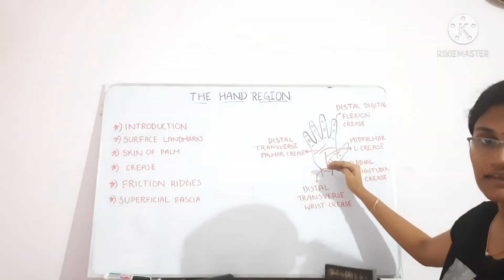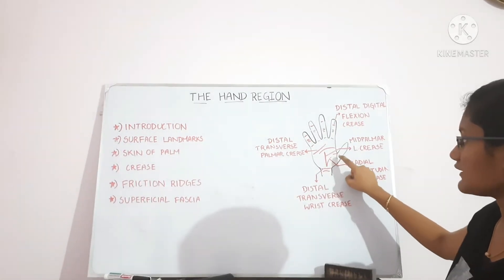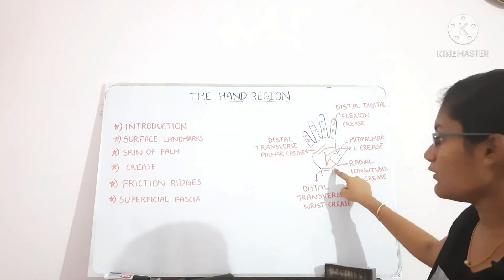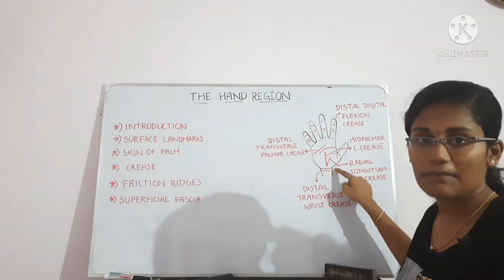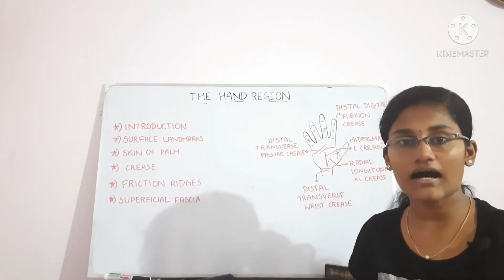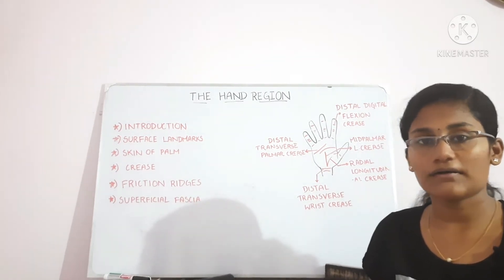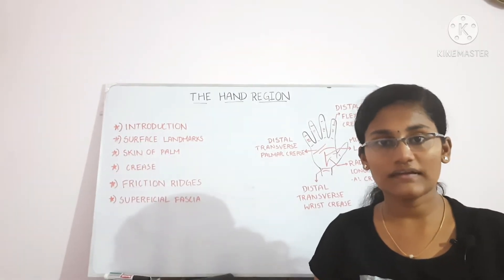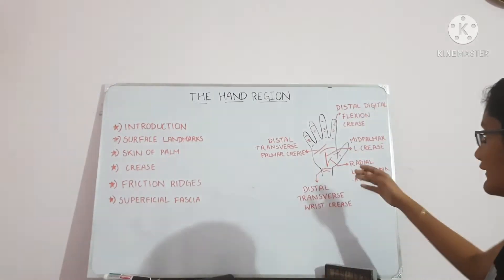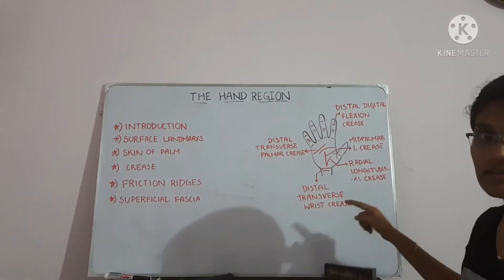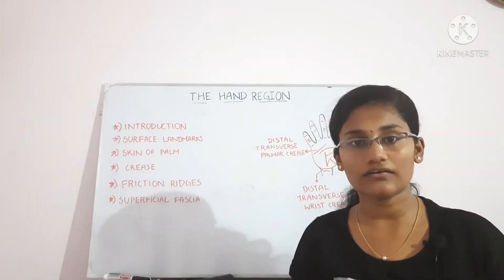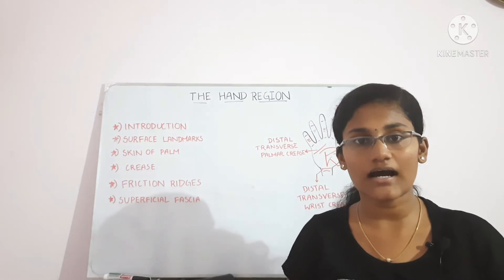The tubercle of scaphoid is present at the base of the thenar eminence, lateral to the distal transverse wrist crease, and lateral to the tendon of the flexor carpi radialis.